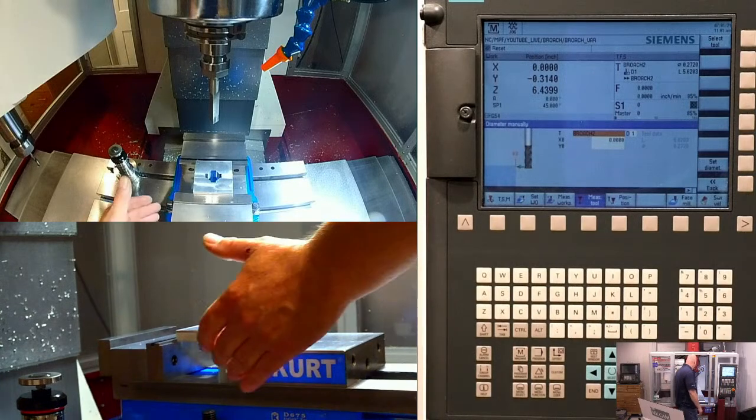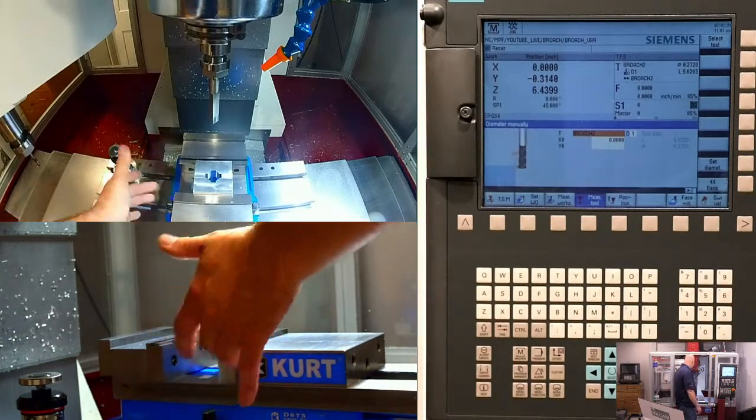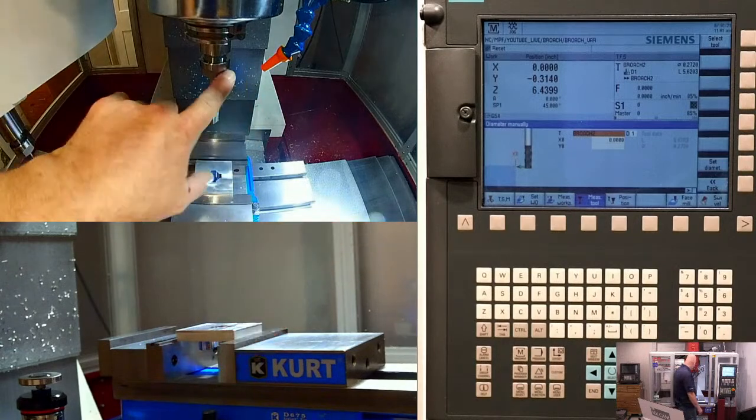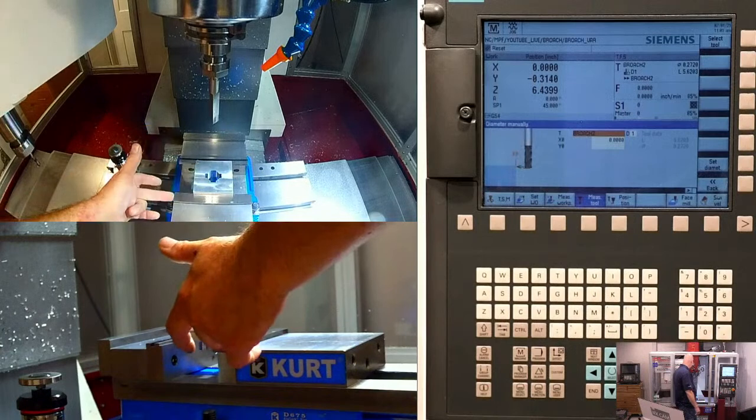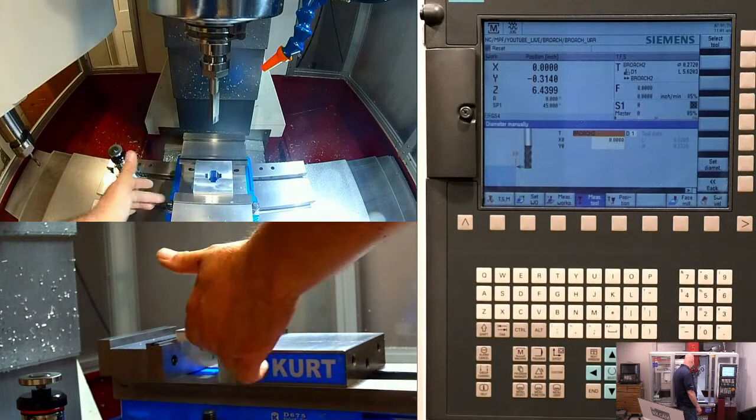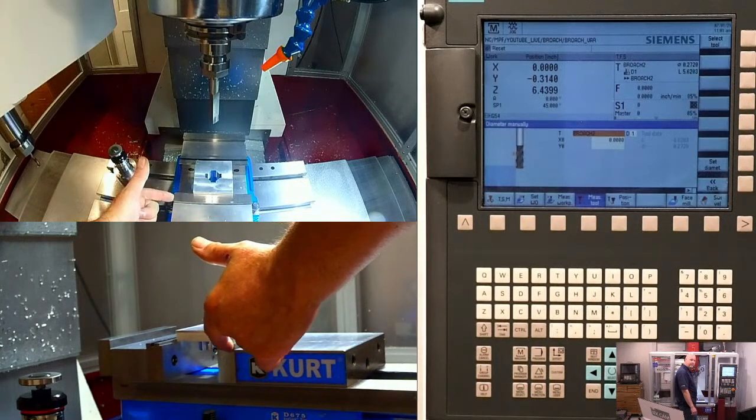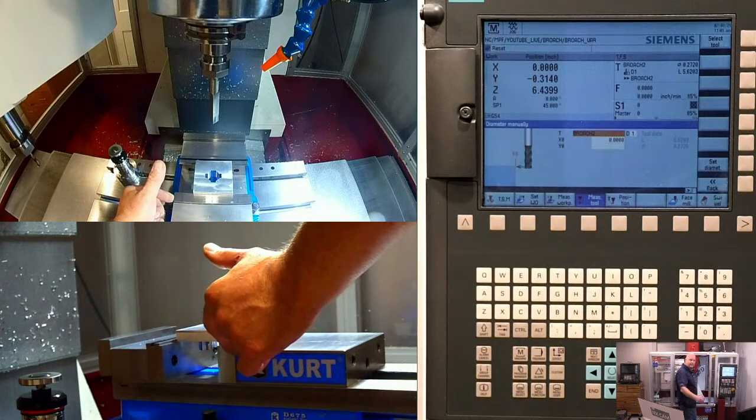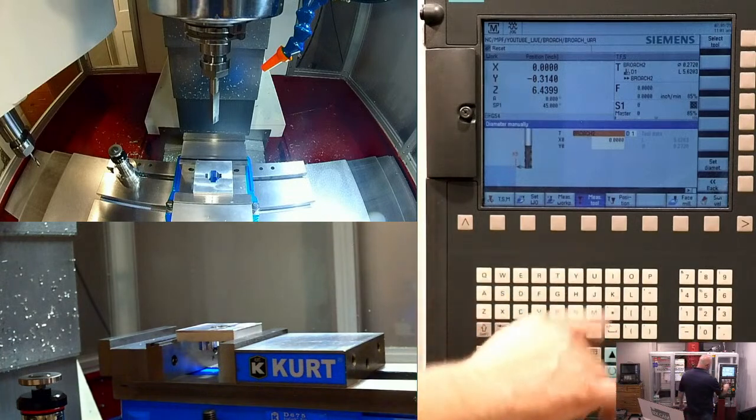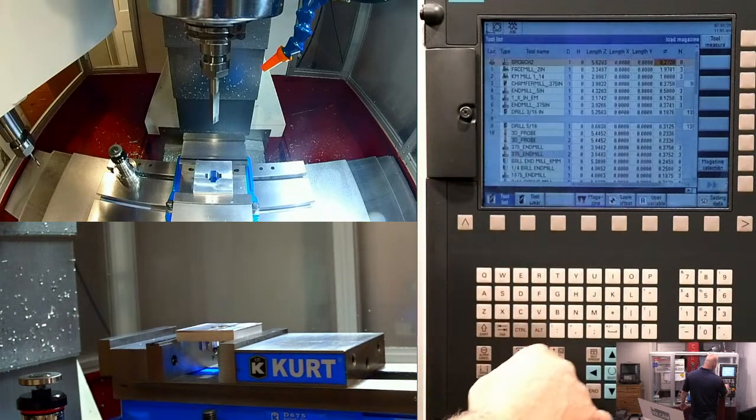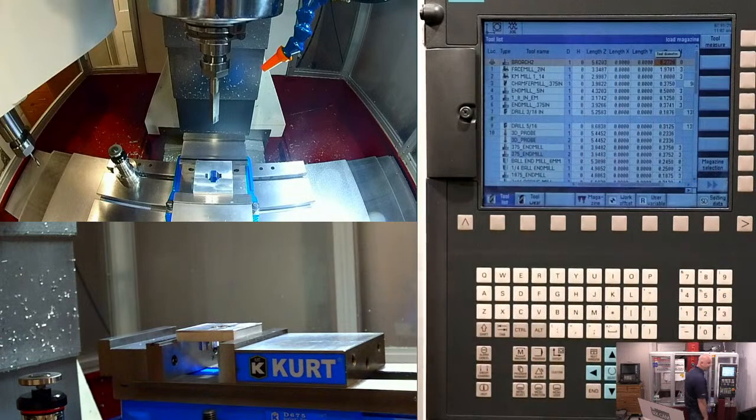Because what I could do, is I could just set up a temporary datum to some fixed point, right side of my jaw. Then I can move the machine over and touch the flat of that tool, obviously with it oriented parallel, to the side of this zero location. And the machine then calculates the diameter, knowing where the spindle is in relation to that.